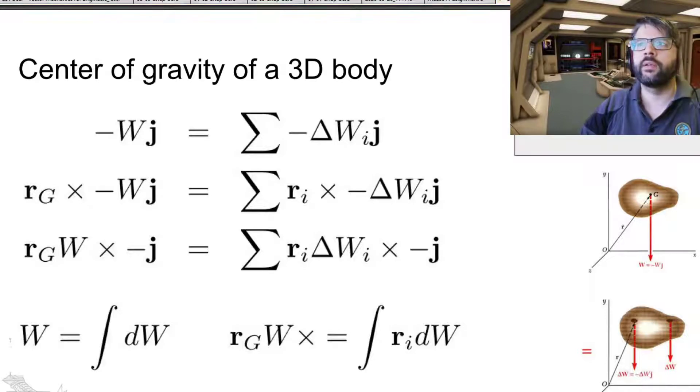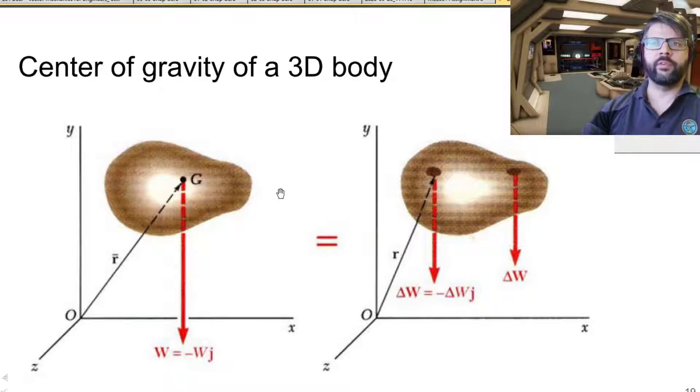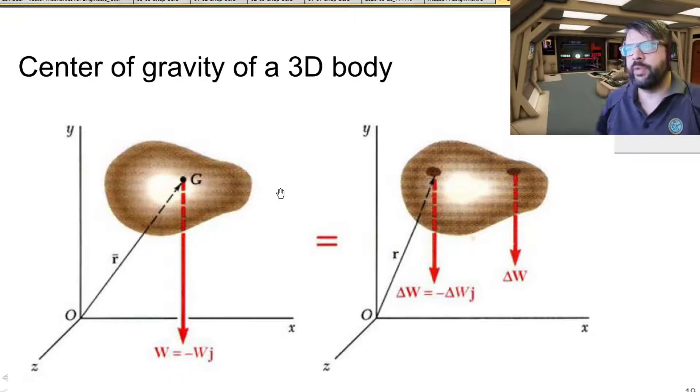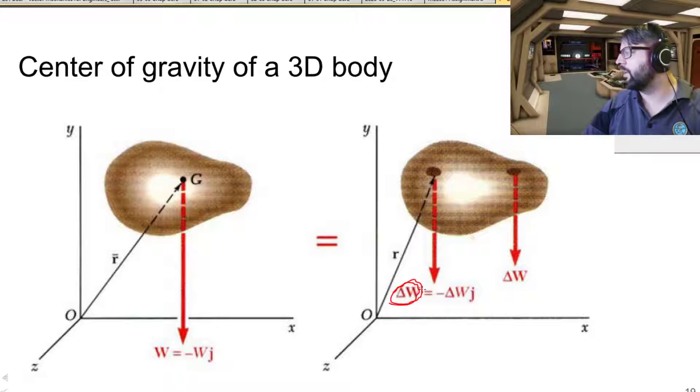So essentially the way it goes is that you can take any body that's made out of a whole bunch of different particles and little tiny bits of volume that have weight to it, and you can replace that system of weights with a single resultant weight that passes through the center of gravity.